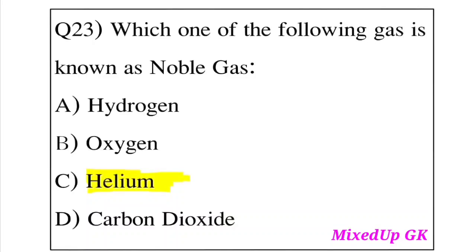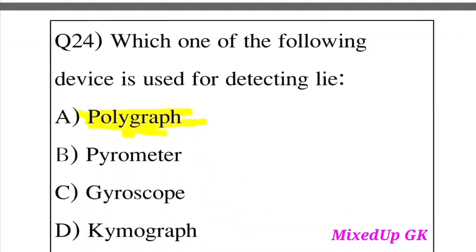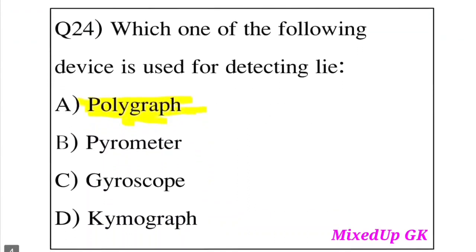Question 24: Which one of the following devices is used for detecting a lie? Option A: Polygraph. Option B: Parameter. Option C: Gyroscope. Option D: Moment graph. The answer is Option A, Polygraph. A polygraph is the device used to detect lies.